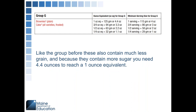In Group G are what we would consider grain-based desserts. You have brownies and cakes. Because there are a lot more ingredients that go into these, and especially more sugar, you need a 4.4 ounce serving for it to credit as one ounce equivalent grain.